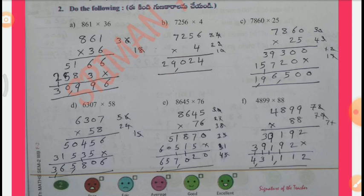D. 6,307 x 58. By multiplication we get 6,57,020. F. 4,899 x 88. By multiplication we get 4,31,112.